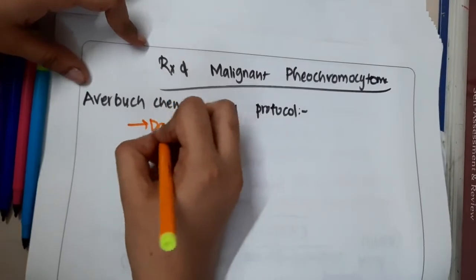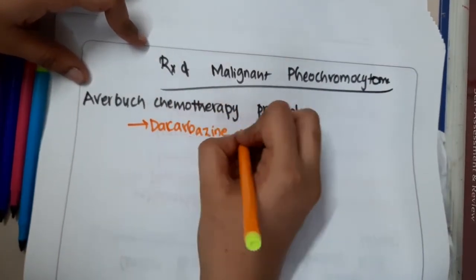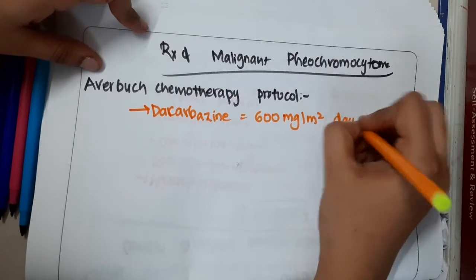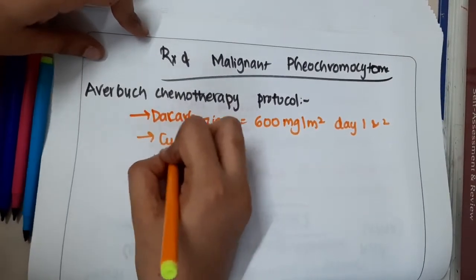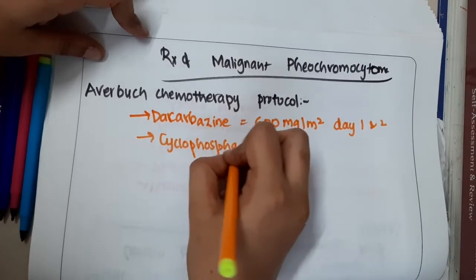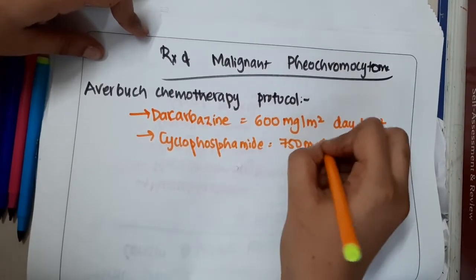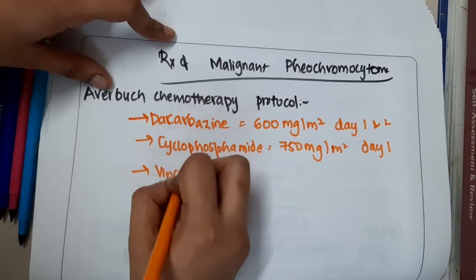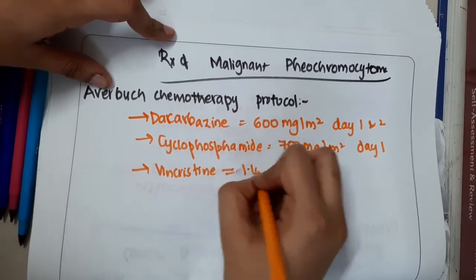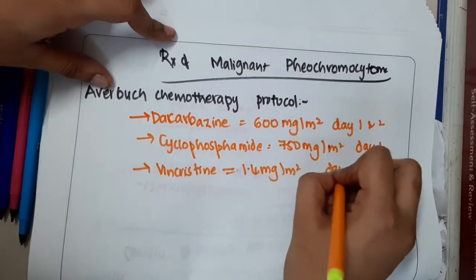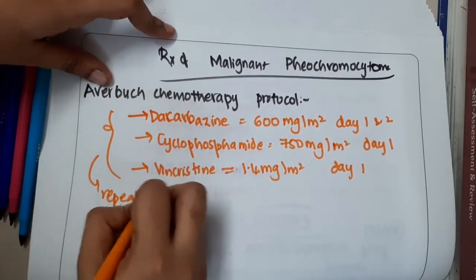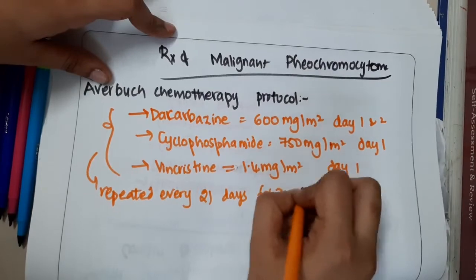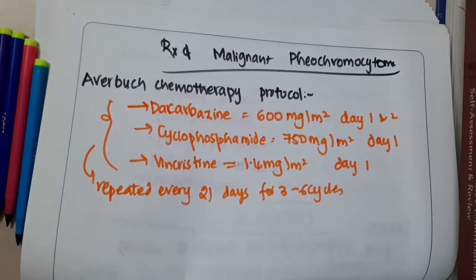In the Averbex chemotherapy protocol, this mainly includes dacarbazine, where you give 600 mg per m² on day 1 and 2, then cyclophosphamide of around 750 mg per m² on day 1, and vincristine 1.4 mg per m² on day 1. All these are repeated every 21 days for 3 to 6 cycles. This is the Averbex chemotherapy which is given.